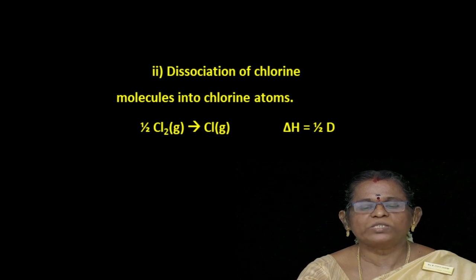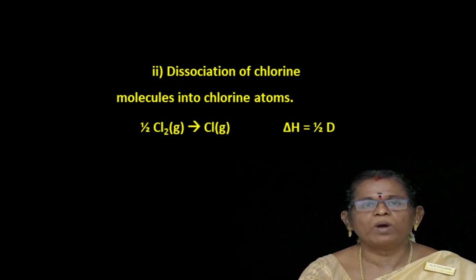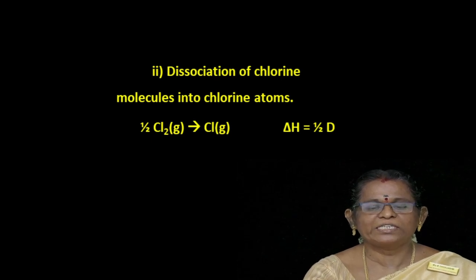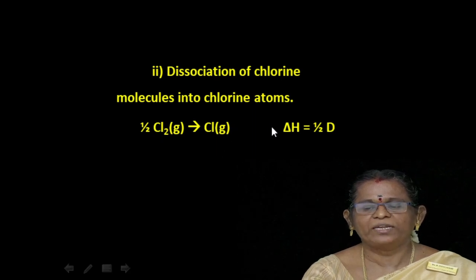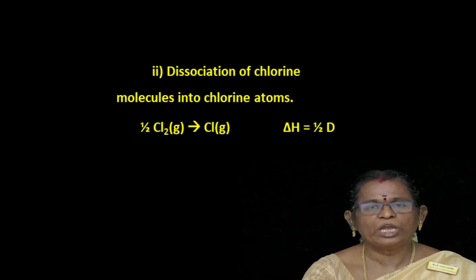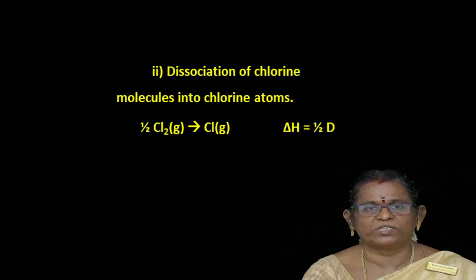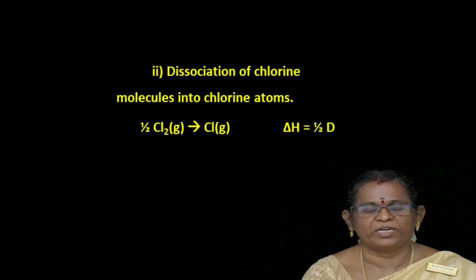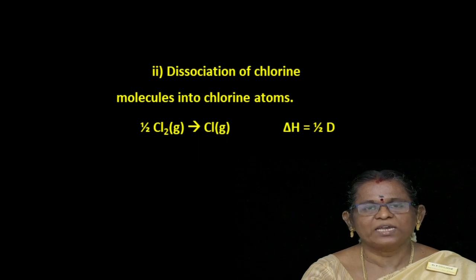Second step: dissociation of chlorine molecules into chlorine atoms. ½ Cl₂ (gaseous) → Cl (gaseous). ΔH = ½D, where D is the dissociation energy. It is an endothermic process, so energy is required and the value is taken as a positive quantity.